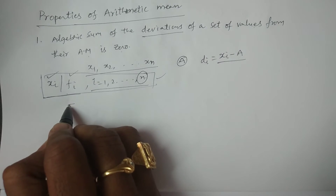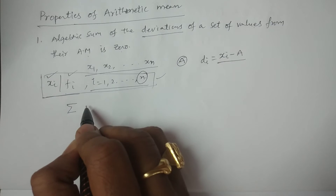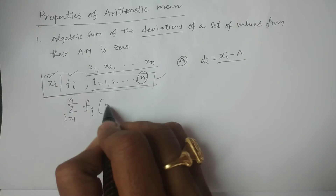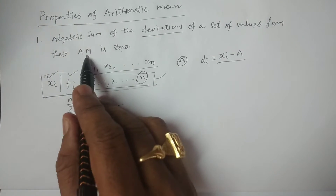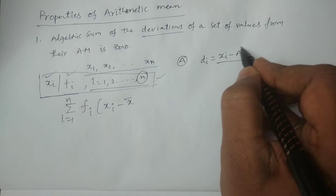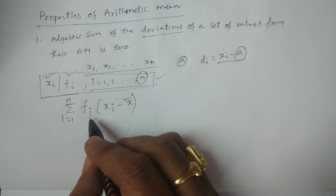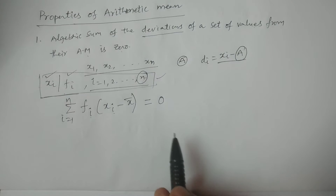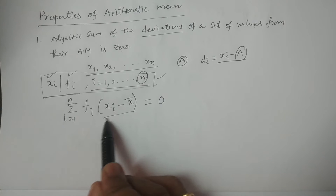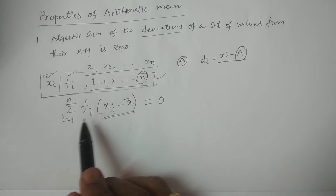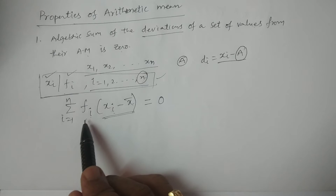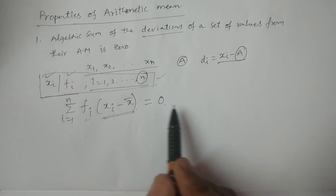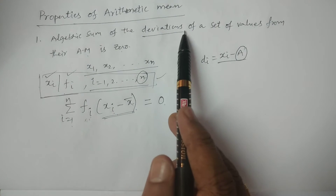That is, for a grouped frequency distribution, we write summation i is equal to 1 to n, fi into xi minus x̄, and this is going to be proved as zero. These are the deviations from the arithmetic mean, xi minus x̄. I am including frequency for a frequency distribution. So summation i equal to 1 to n, fi into xi minus x̄ becomes zero. That is called algebraic sum of deviations.